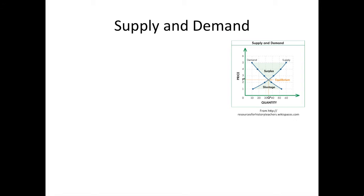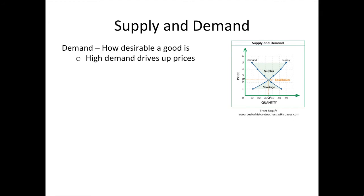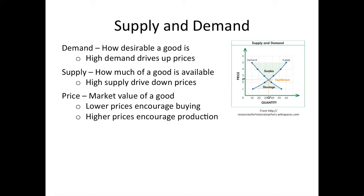You've probably heard of supply and demand. It's at the heart of the free market system. In the simplest terms, it refers to the idea that the supply, the demand, and the price of a particular good are all related to one another. Essentially, if there is a high demand for something that is in short supply, its price will naturally be driven up. And likewise, if there is low demand for something that there's a lot of, the price will naturally fall.